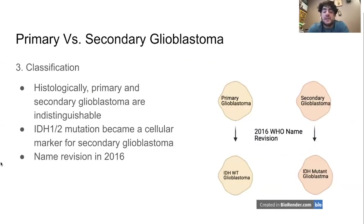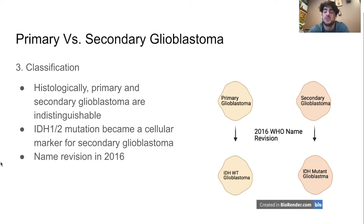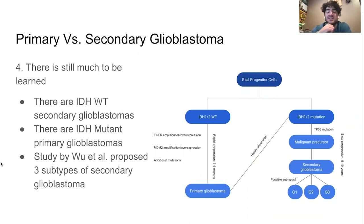The presence of the IDH1 and IDH2 mutation has been widely accepted as the molecular marker for secondary glioblastomas. In 2016, the World Health Organization conducted a nomenclature revision, renaming primary glioblastomas to IDH wild-type glioblastomas and secondary glioblastomas to IDH mutant glioblastomas. However, this is complicated by the existence of IDH wild-type secondary glioblastomas and IDH mutant primary glioblastomas.